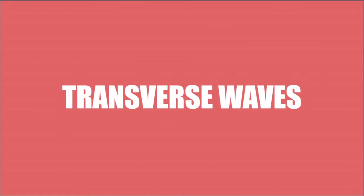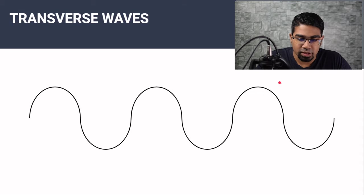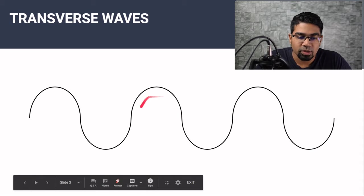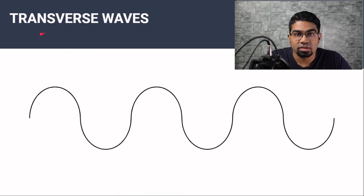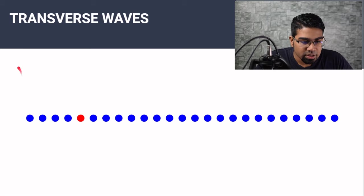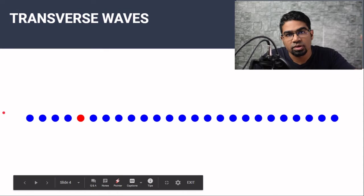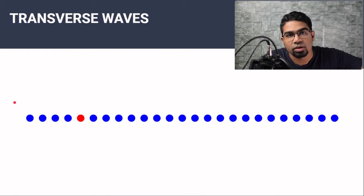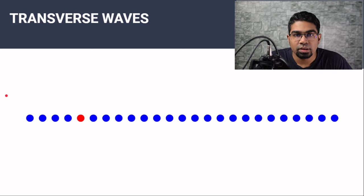First, let's take a look at transverse waves. When we think about waves, this is probably the image that comes to mind — a very familiar picture of waves. These type of waves are actually known as transverse waves. Imagine that these are the water particles on the surface of a pool, and you cause a disturbance on the left side. You can drop something into the pool and you will see a ripple spreading out from that point. Let's see what is happening to the particles of water on the surface of the pool.